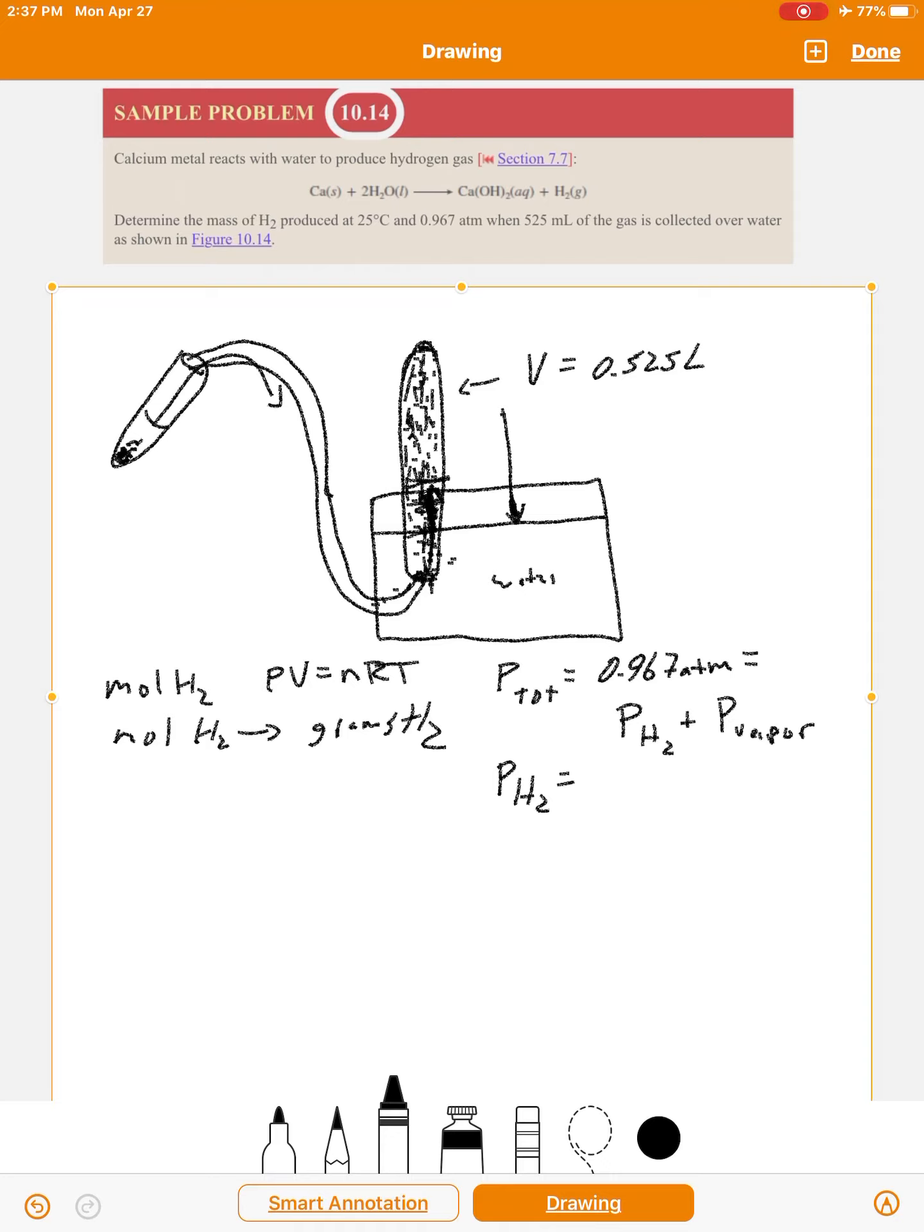So that means if you want to know what the pressure of the hydrogen gas is, which we would call the dry pressure, meaning without the pressure of the water, you would take the total pressure and subtract the vapor pressure of the water. So that would be 0.967 atmospheres minus whatever the vapor pressure is.